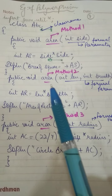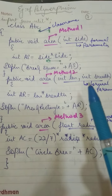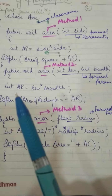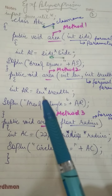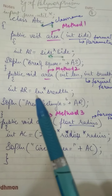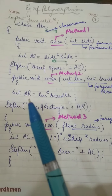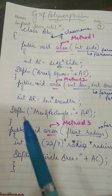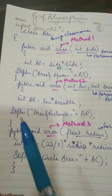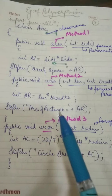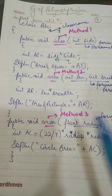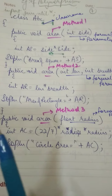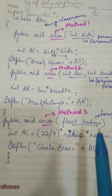The next method is public void area with two parameters: length and breadth. It is for calculating the area of a rectangle. The formula is length * breadth, and we store the result in the ar variable. We display the output using System.out.println, again storing in the ar variable.